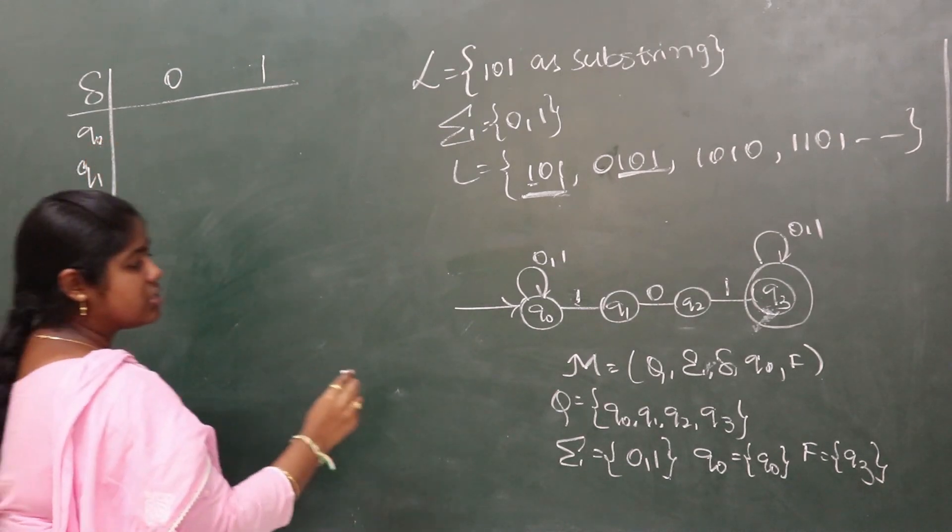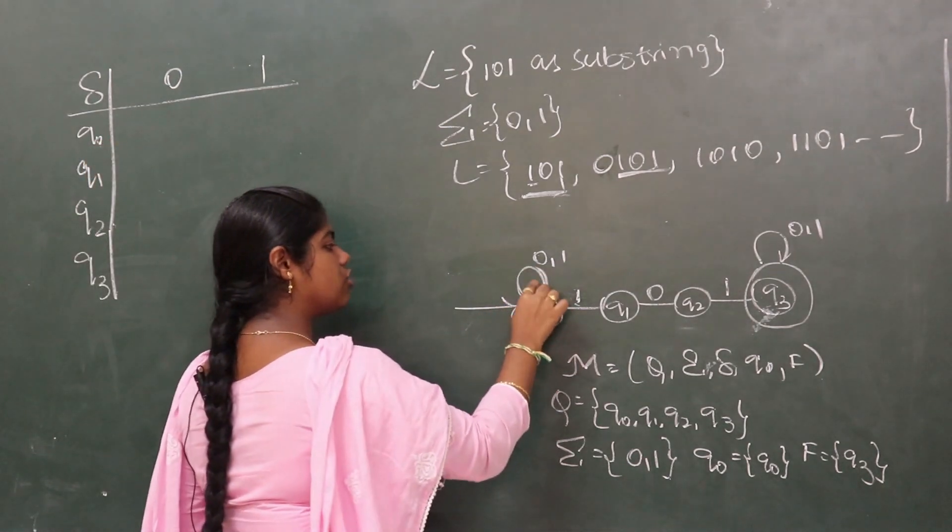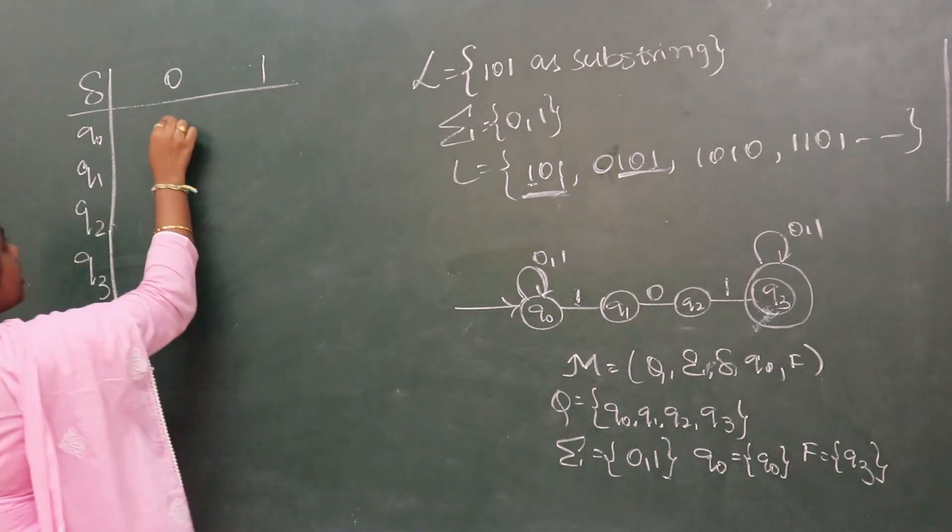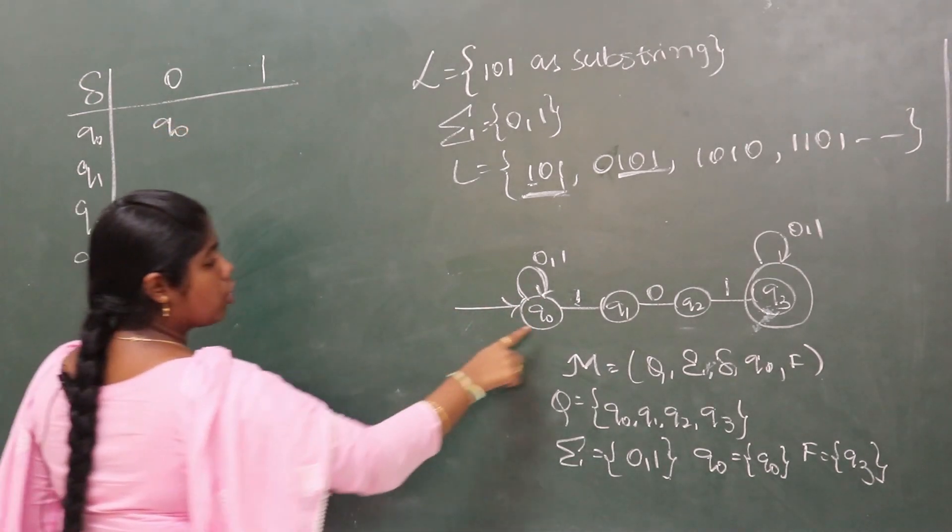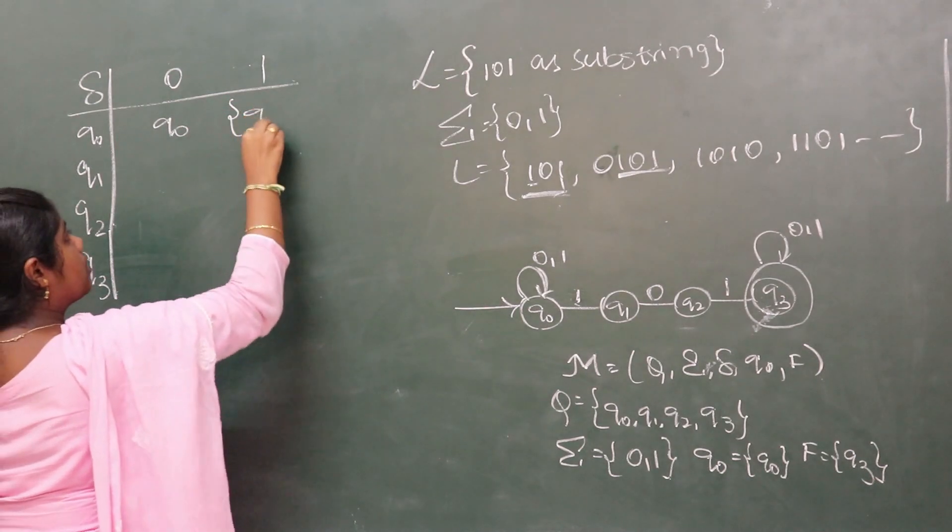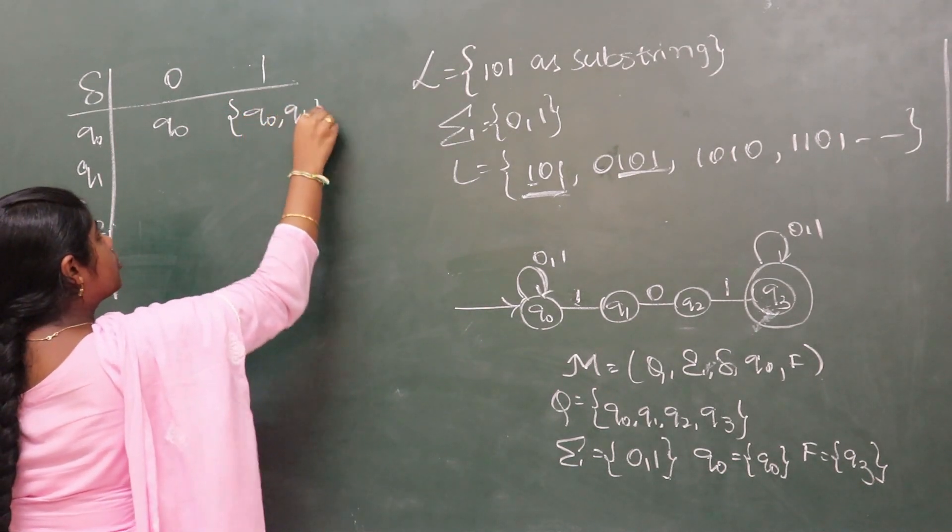q0 on 0 transition goes to q0, therefore q0. q0 on 1 goes to q0 and q1, therefore q0, q1. q1 on 0 goes to q2.